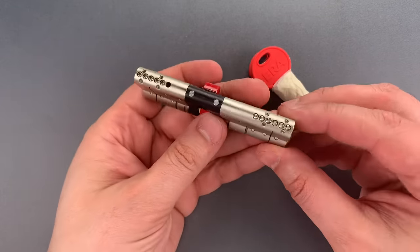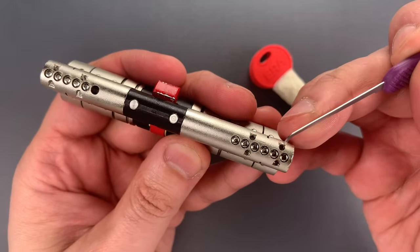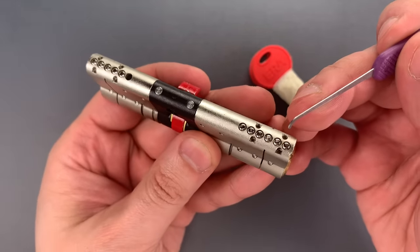To slow down drill attempts, we can see there are at least four hardened anti-drill pins, two on each side, and they're designed to damage drill bits.